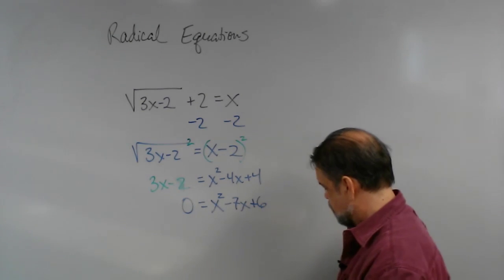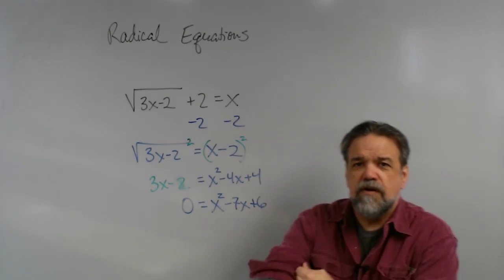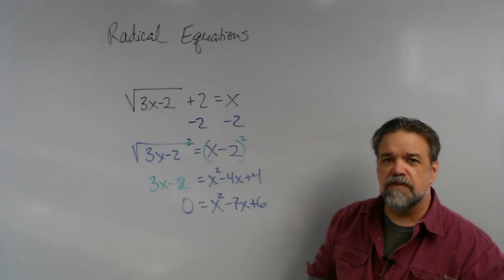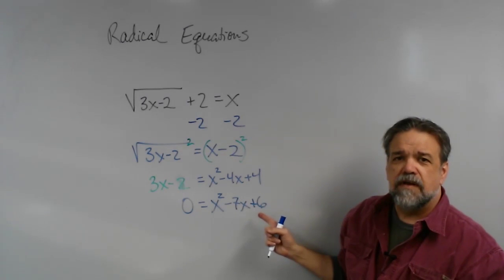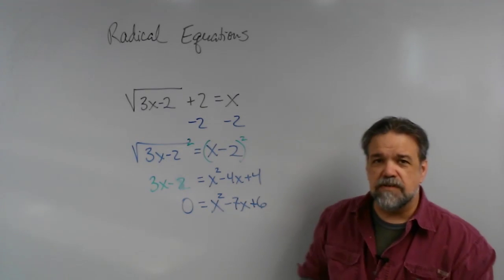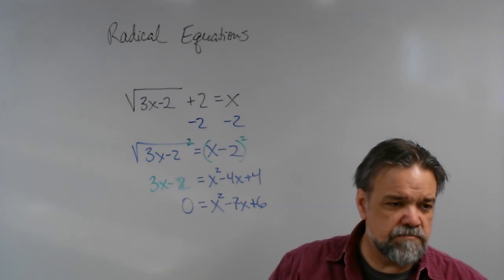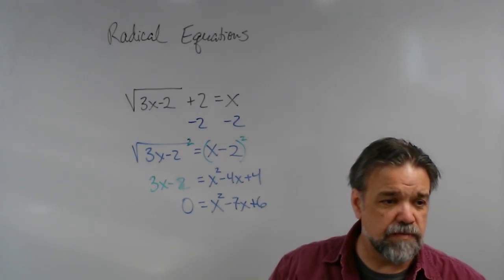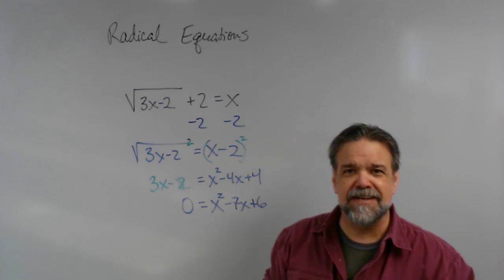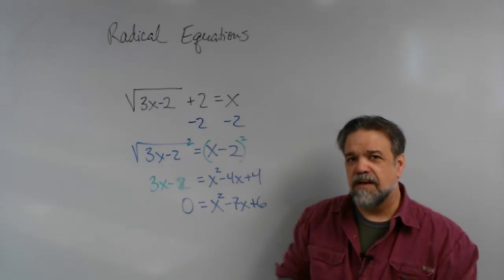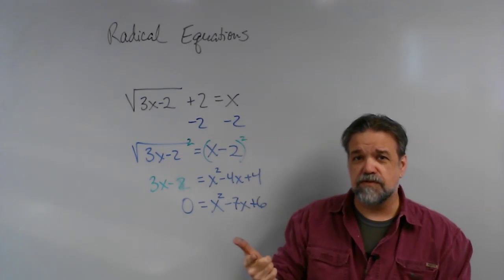x squared minus 7x plus 6, so now I have to solve this quadratic equation and it's equal to 0. Man, if only I had one method or two methods or three methods. I do have three methods that I could use to solve this thing. I could factor it, I could complete the square, I could use a quadratic formula.